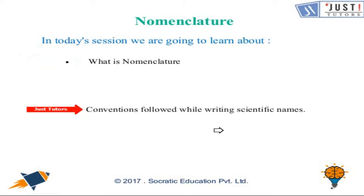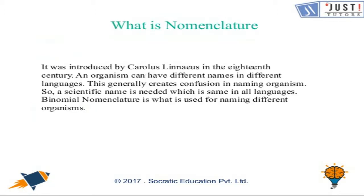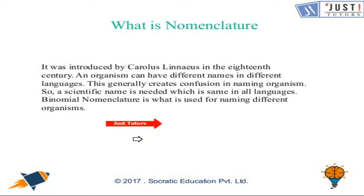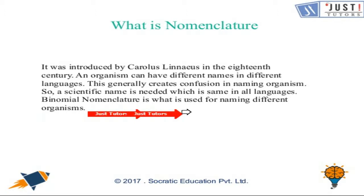Let's have a look at what exactly is nomenclature. It was introduced by Carolus Linnaeus in the 18th century. An organism can have different names in different languages, which generally creates confusion in naming organisms. So a scientific name is needed which is the same in all languages. Binomial nomenclature is what is used for naming different organisms.